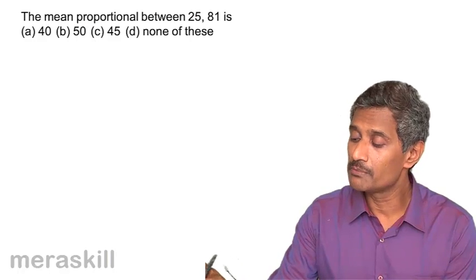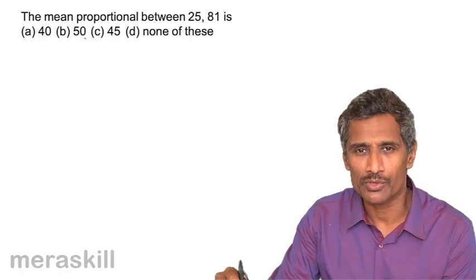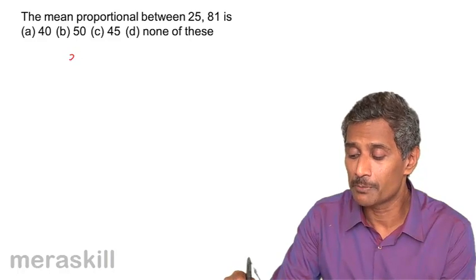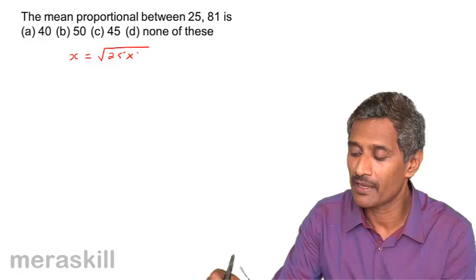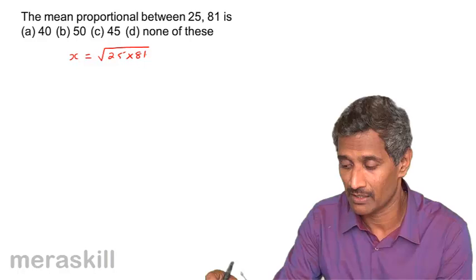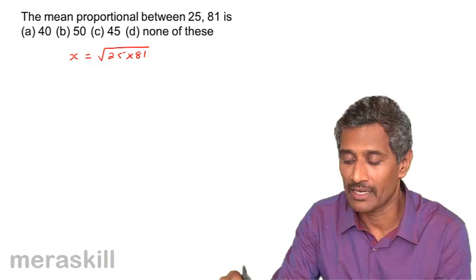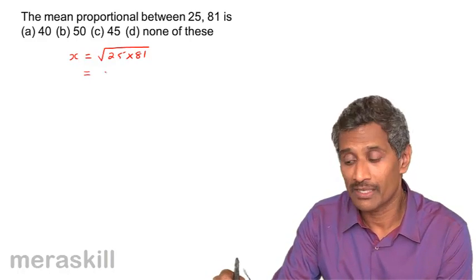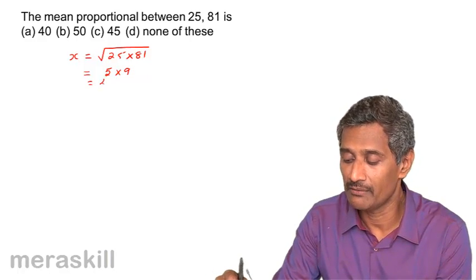The mean proportional between 25 and 81 is what among these? We need to use the process of elimination, a simple computation that we need to do. So, the mean proportional X in this case is nothing but square root of 25 times 81. Either you say X squared equal to 25 times 81, which is the same as telling X equal to root 25 times 81. Root 25 is 5 and root 81 is 9, 5 times 9, 45.